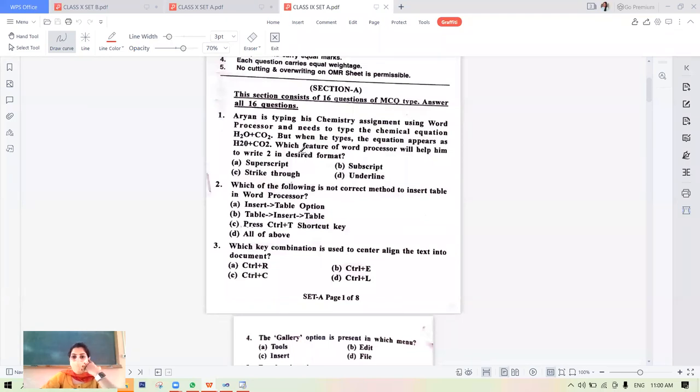Aryan is typing his chemistry assignment using a word processor and needs to type the chemical equation H2O plus CO2. When he types the equation, the 2 in H2O is not appearing in the base. Which feature will help him write 2 in the desired format? The options were superscript, subscript, strikethrough, underline. So the answer will be subscript, B part.